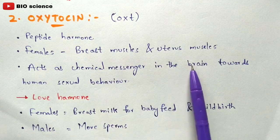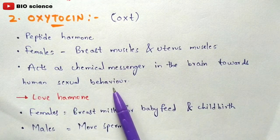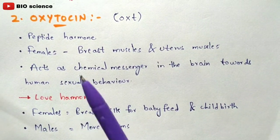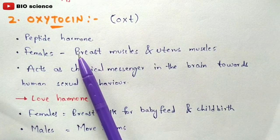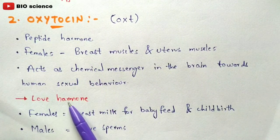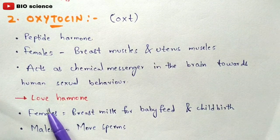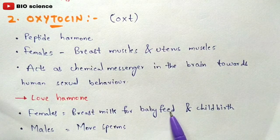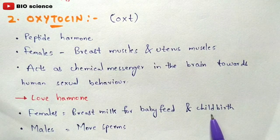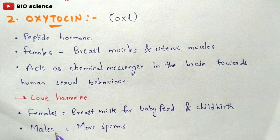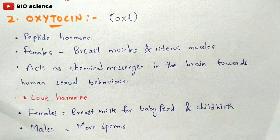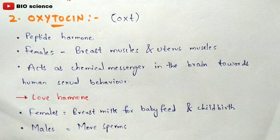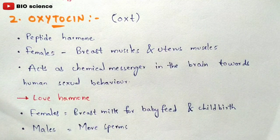Oxytocin acts as a chemical messenger in the brain towards human sexual behavior — it plays a major role in feelings of love towards the opposite gender, and is hence also called the love hormone. In females, it is mainly used for breast milk ejection for baby feeding and during childbirth. In males, it is mainly used to produce sperm and for the ejaculation of sperm from the testes.